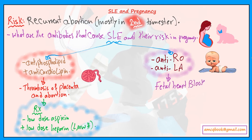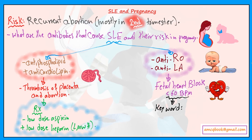The second category is anti-Ro and anti-La antibodies. These two antibodies are responsible for fetal heart block — meaning a fetal heart rate less than 60 beats per minute. The keyword to differentiate this fetal heart block caused by anti-Ro and anti-La from other causes is that the fetal heart rate is low and does not respond to atropine.